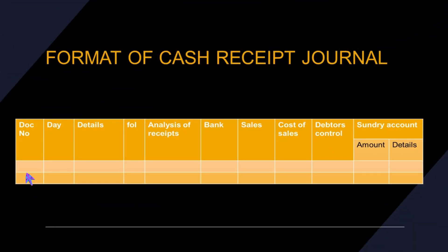Now let's take a look at the format of the cash receipts journal. You will be provided with a format whenever you are required to complete one. We are going to have a document number column to record our source documents, a column for the day the transaction took place, details showing whom we got money from, analysis of receipt showing how much money we received, and then bank. We also have columns for sales, cost of sales, debtors control, and sundry account.